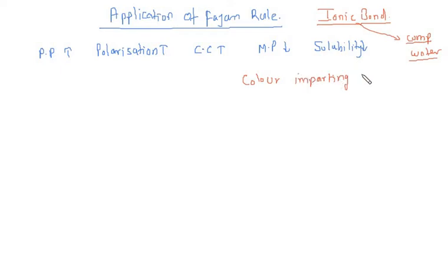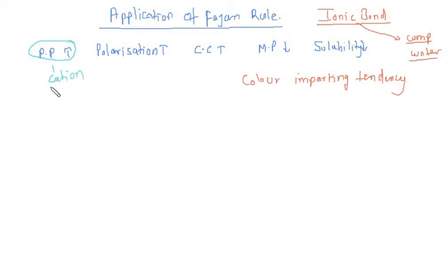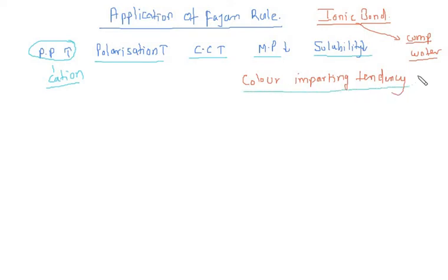The third effect: with an increase in covalent character, color imparting tendency will also increase. To summarize: if the polarization power of the cation increases, the phenomenon of polarization increases, the covalent character of the compound increases, melting point decreases, solubility decreases, and the color imparting tendency increases.